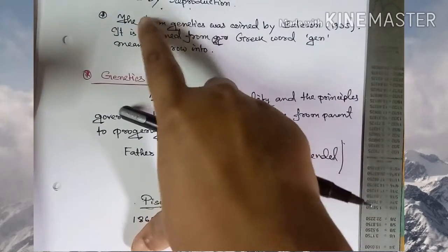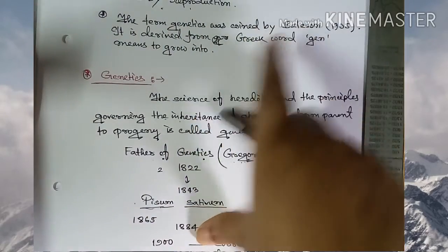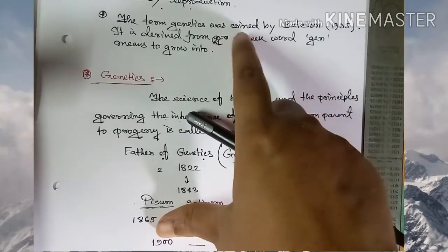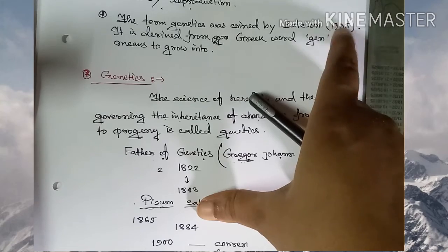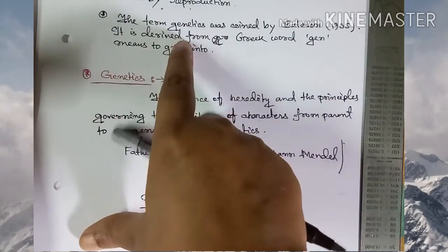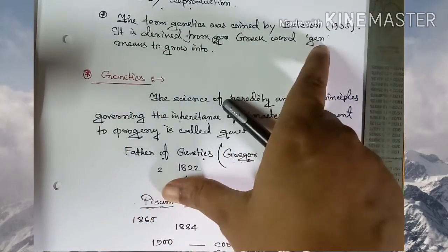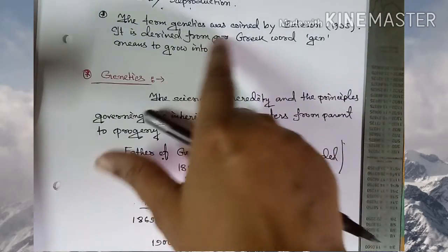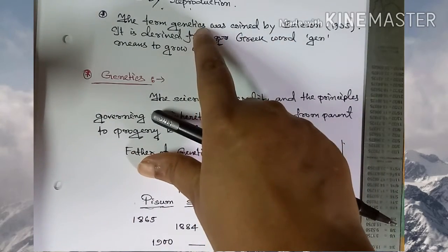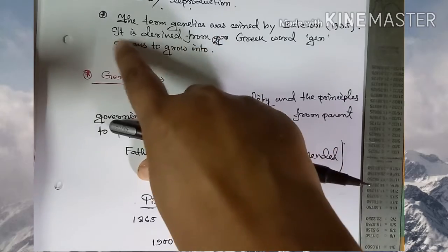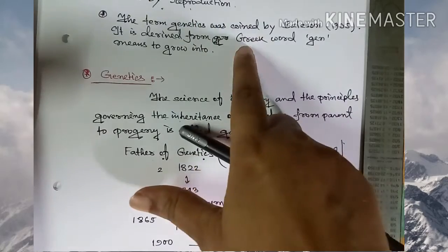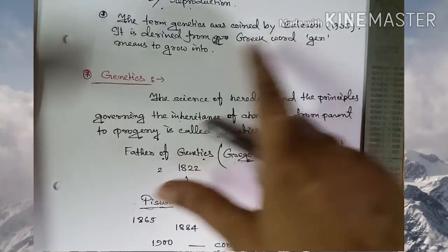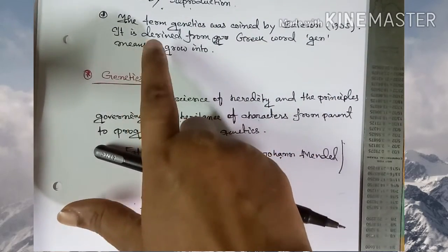The term genetics was coined by Batson in 1905. It is derived from the Greek word 'gene,' which means to grow into.